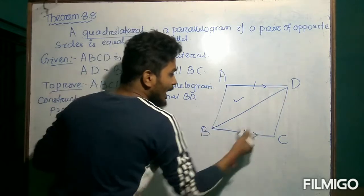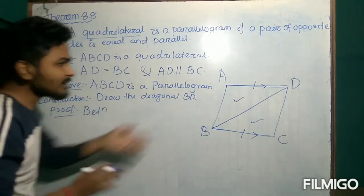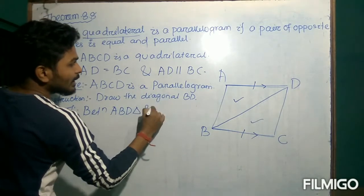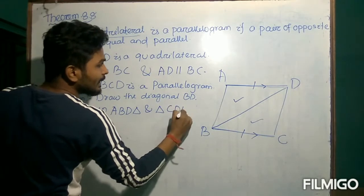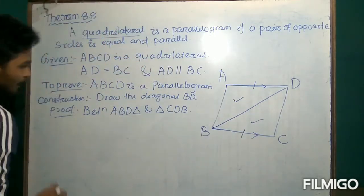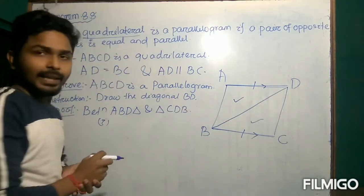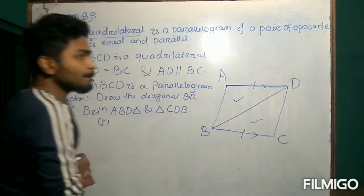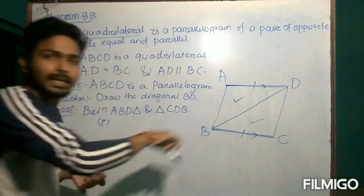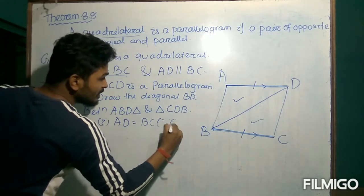The two triangles are triangle ABD and triangle CDB. We will compare these two triangles to check whether they are congruent or not. First condition: for triangle ADB, AD is a side; similarly for triangle CDB, BC is a side. So AD equals BC — since it is given. Next, it is given that AD is parallel to BC, and DB is the transversal line. For these two parallel lines with DB as transversal, angle ADB and angle CBD are alternate interior angles, so angle ADB equals angle CBD.